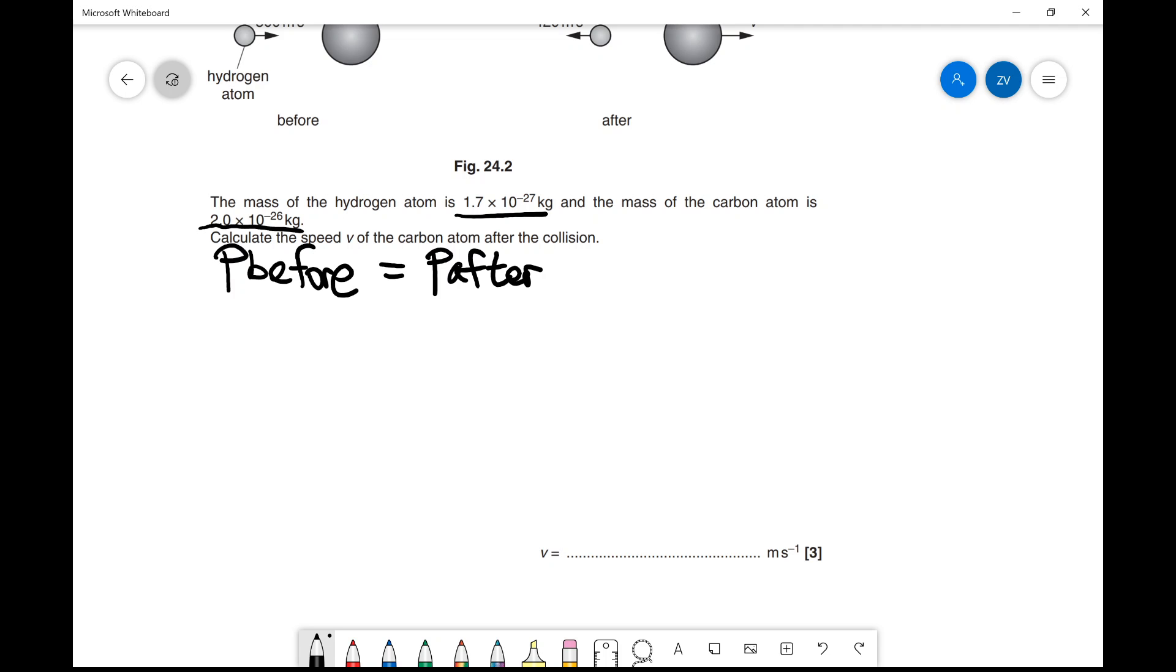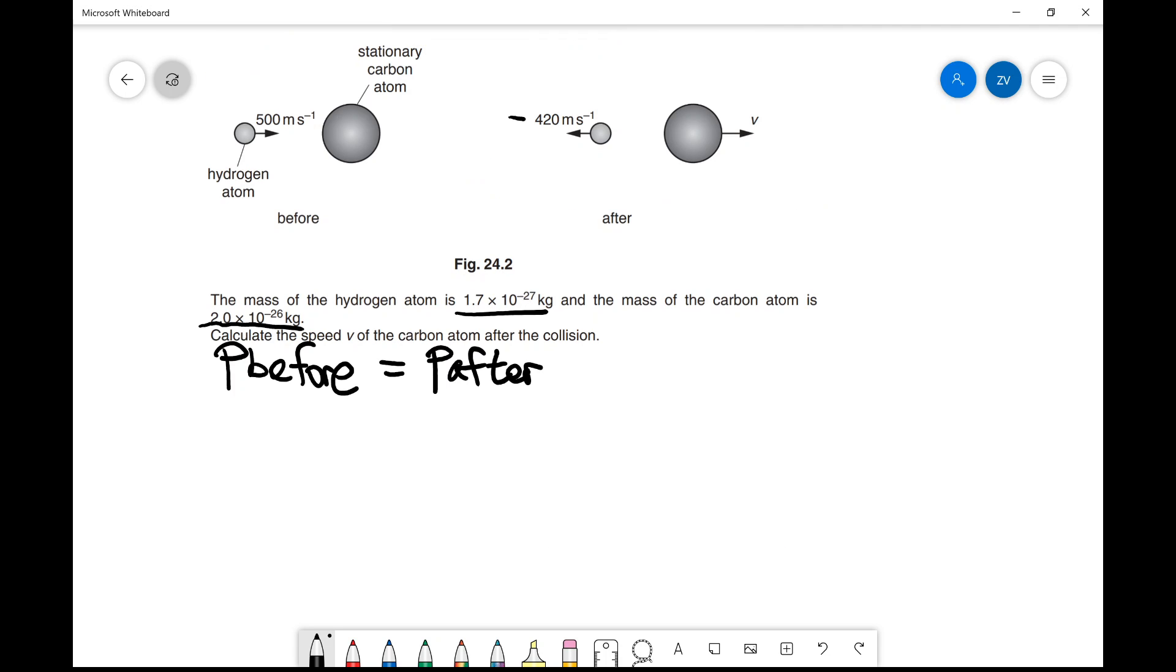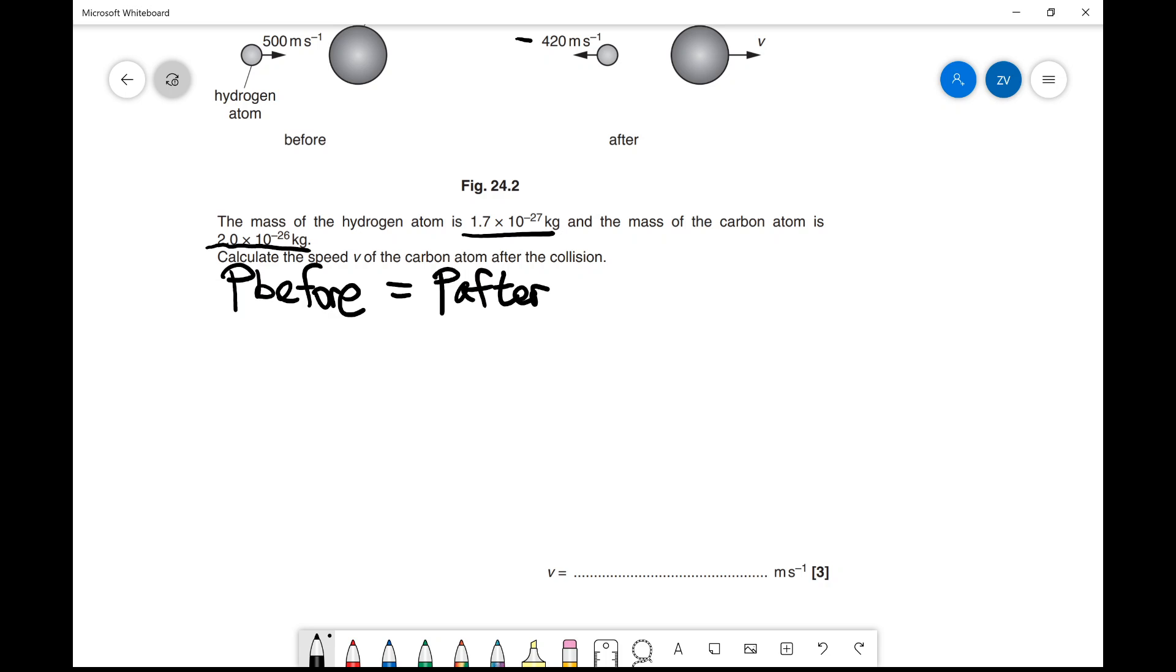Before the collision, only one object is moving: the hydrogen atom. That's our whole momentum before the collision. Because momentum is mass times velocity,